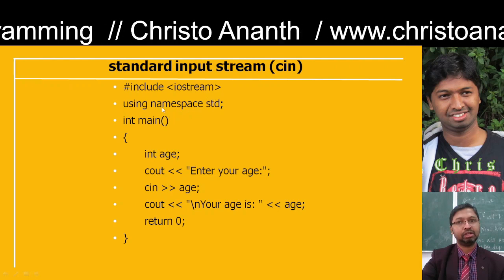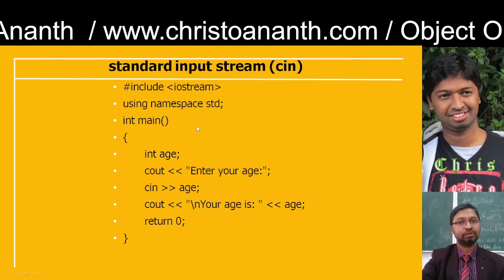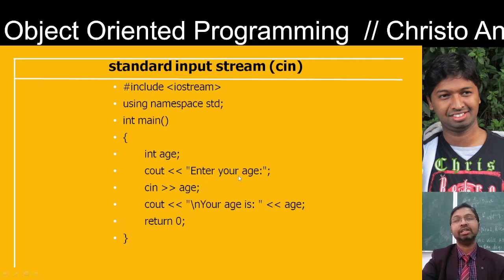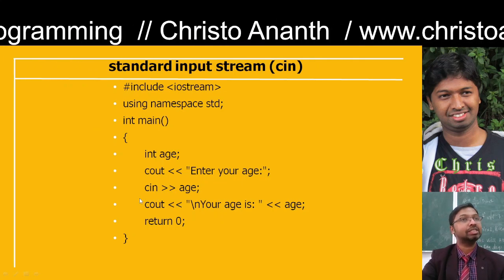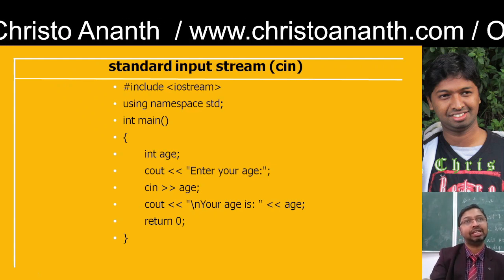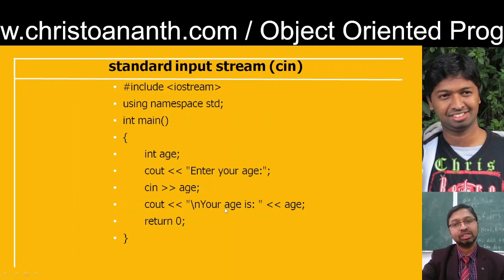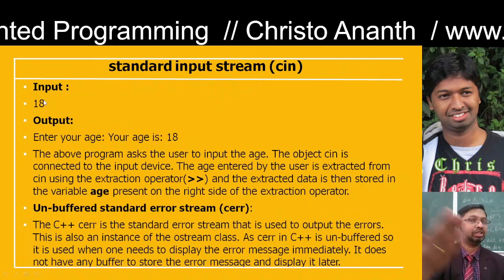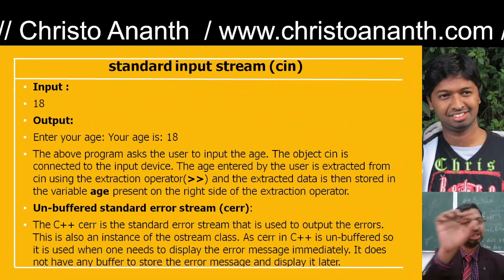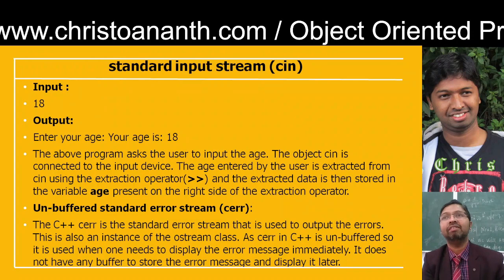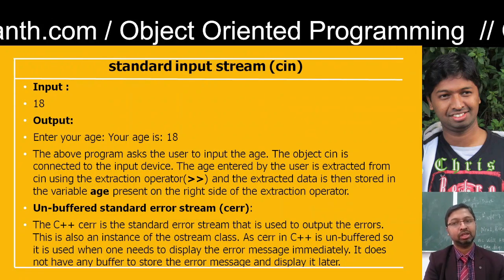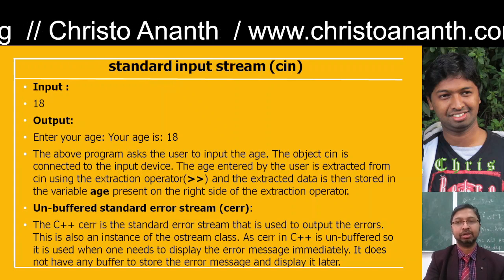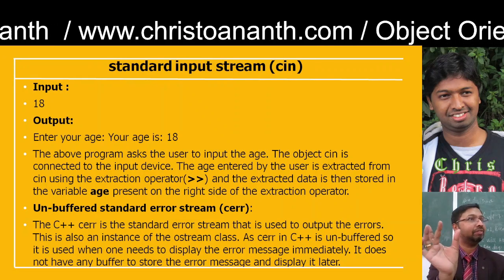For example, in the input statement: #include iostream, using namespace std, in main function, int h. Then cout with the insertion operator 'enter your h'. Then cin with the extraction operator — which means you are going to extract h. Then cout 'your h is' followed by h, and return 0. If you give input as 80, the output would be 'enter your h', then it will display 'your h is 80'. The cin is connected to the input device and h is extracted from cin using the extraction operator, then stored in the variable h.